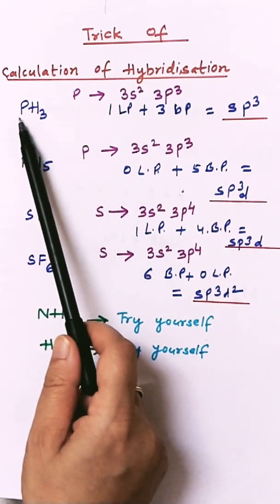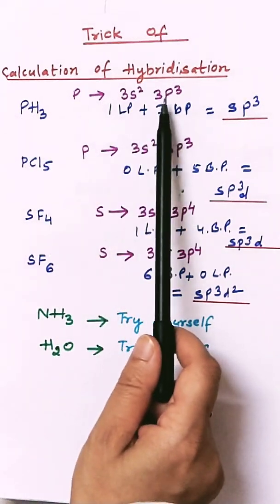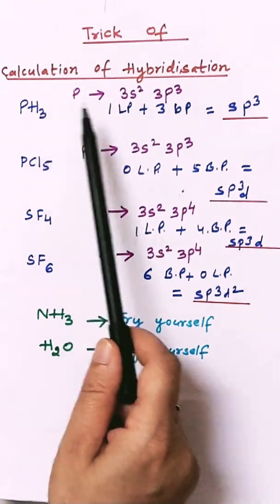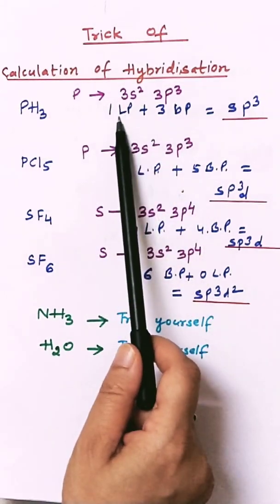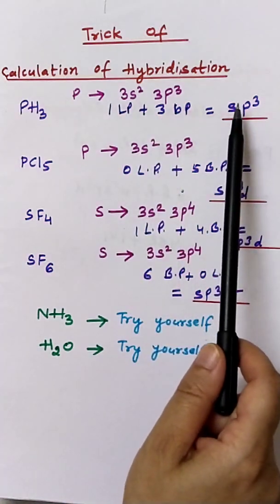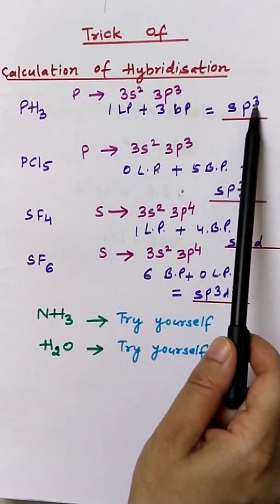Calculation of hybridization in PH3 molecule. Phosphorus has 5 valence electrons. 3 valence electrons of phosphorus will form 3 bond pairs with 3 hydrogen atoms and 1 lone pair will be left. So in total, 4. The hybridization will be sp3: 1 plus 3 equals 4.